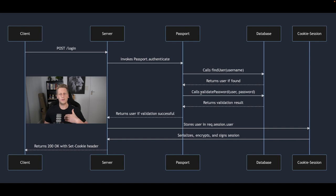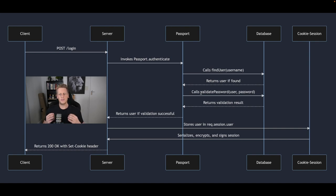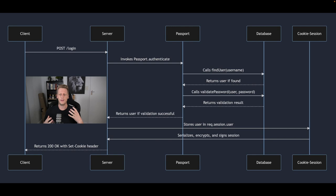If both of those checks are passed, it's going to return the result back to the Passport authenticate function and hand it back to our server. At this stage we will create an authenticated session and we will serialize that information through the use of cookies, making use of a package called cookie-session. That serialized data is going to be signed and then returned back to the server, and we can then create a session that stores that extra piece of data on future HTTP requests in the form of a cookie.